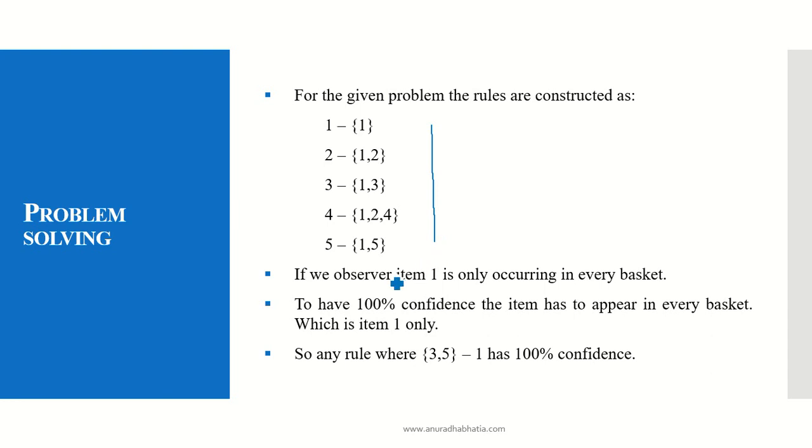Any rule where item 1 appears, if there is a rule {3,5} and it appears in the first basket, then it has 100% confidence.